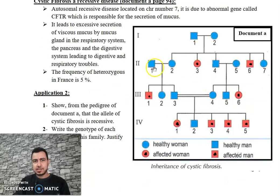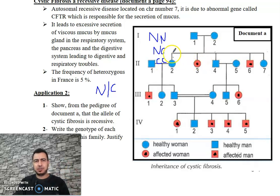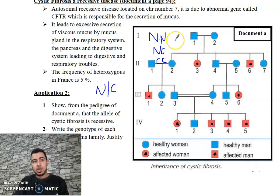We are going to talk about cystic fibrosis, shown in a pedigree. For cystic fibrosis, if we take C as the allele for the disease and N as the normal allele: NN is normal pure, CC is affected pure, and NC is normal phenotypically but a carrier for the disease.